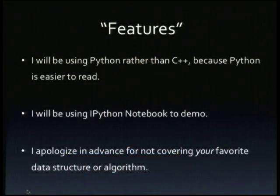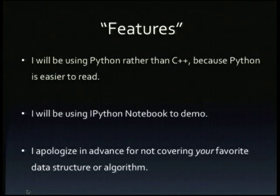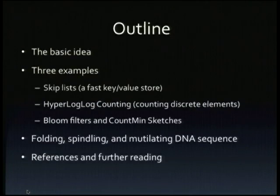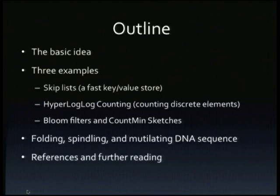Two years ago I gave a similar talk on bloom filters with respect to my research, and people on Twitter asked why I was using Python and not C++. Well, I use C++ in the real world, but when trying to explain things to people, C++ is usually the wrong language. So everything here is in Python, though it's trivially portable to C++. I'm going to give you three basic examples: skip lists, which are interesting from a random data stream perspective; hyperloglog counting, for counting discrete elements; and bloom filters and count-min sketches. At the end I'll talk about my research — folding, spindling, and mutilating DNA sequence — and give references for further reading.